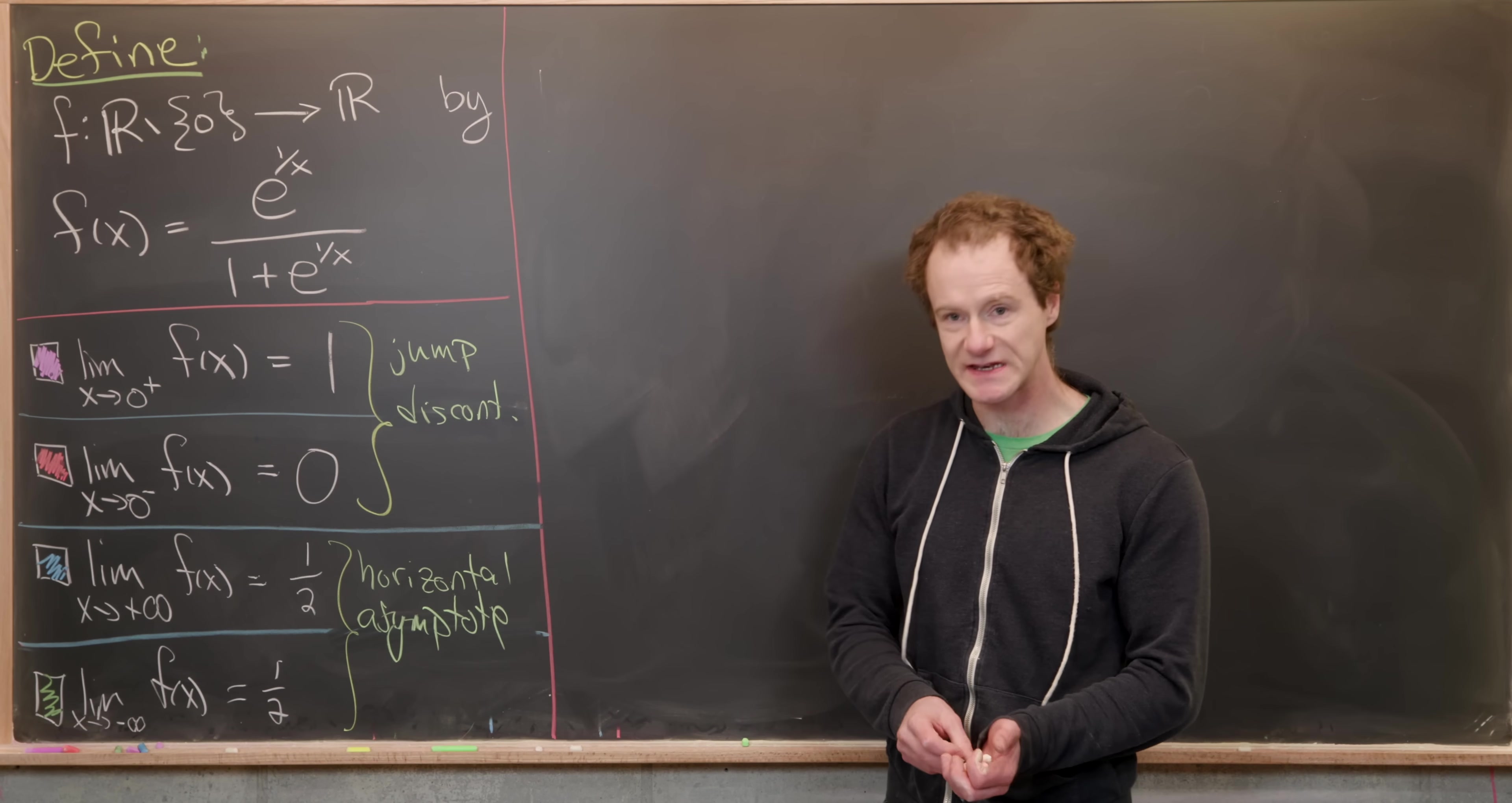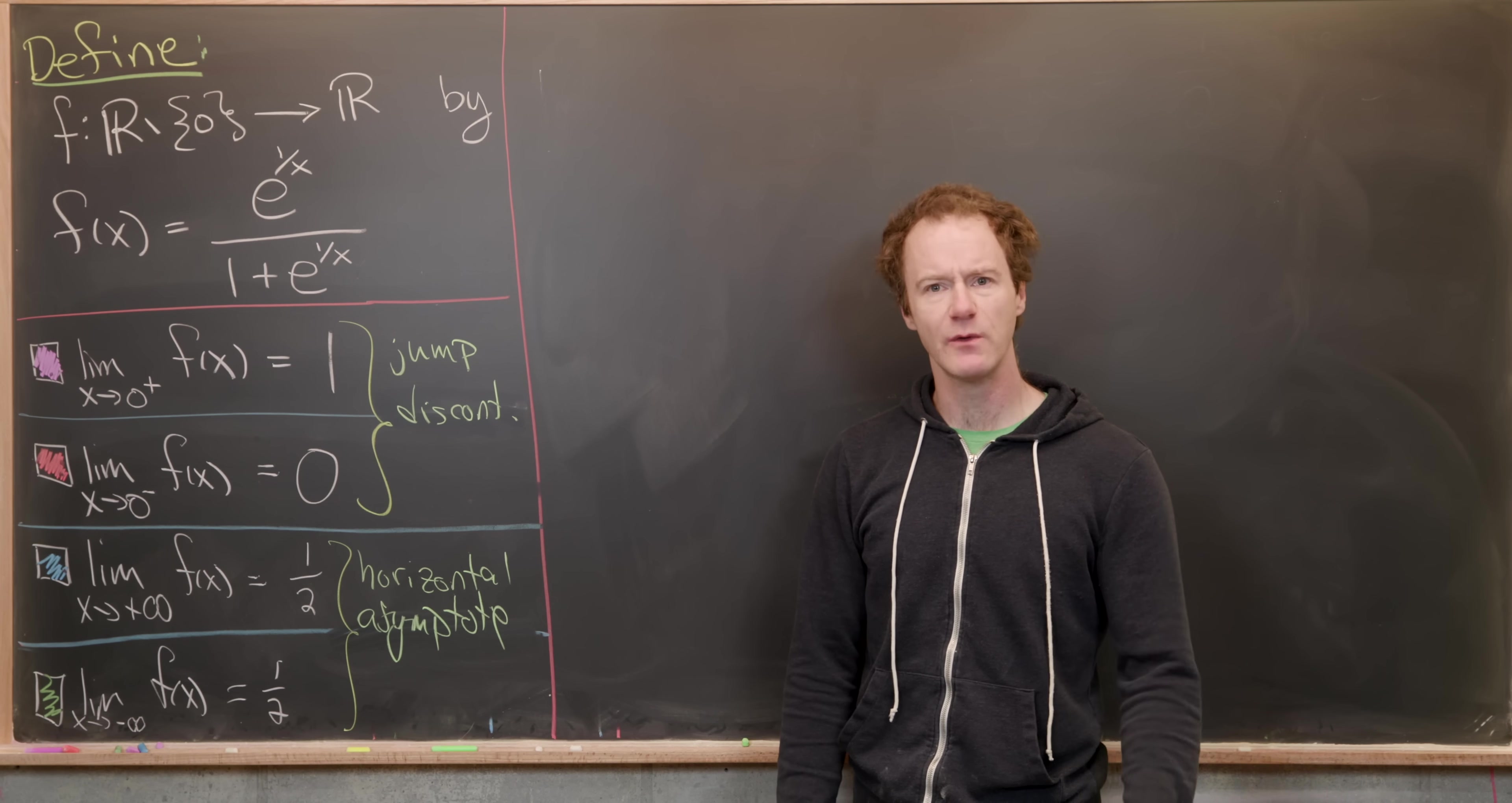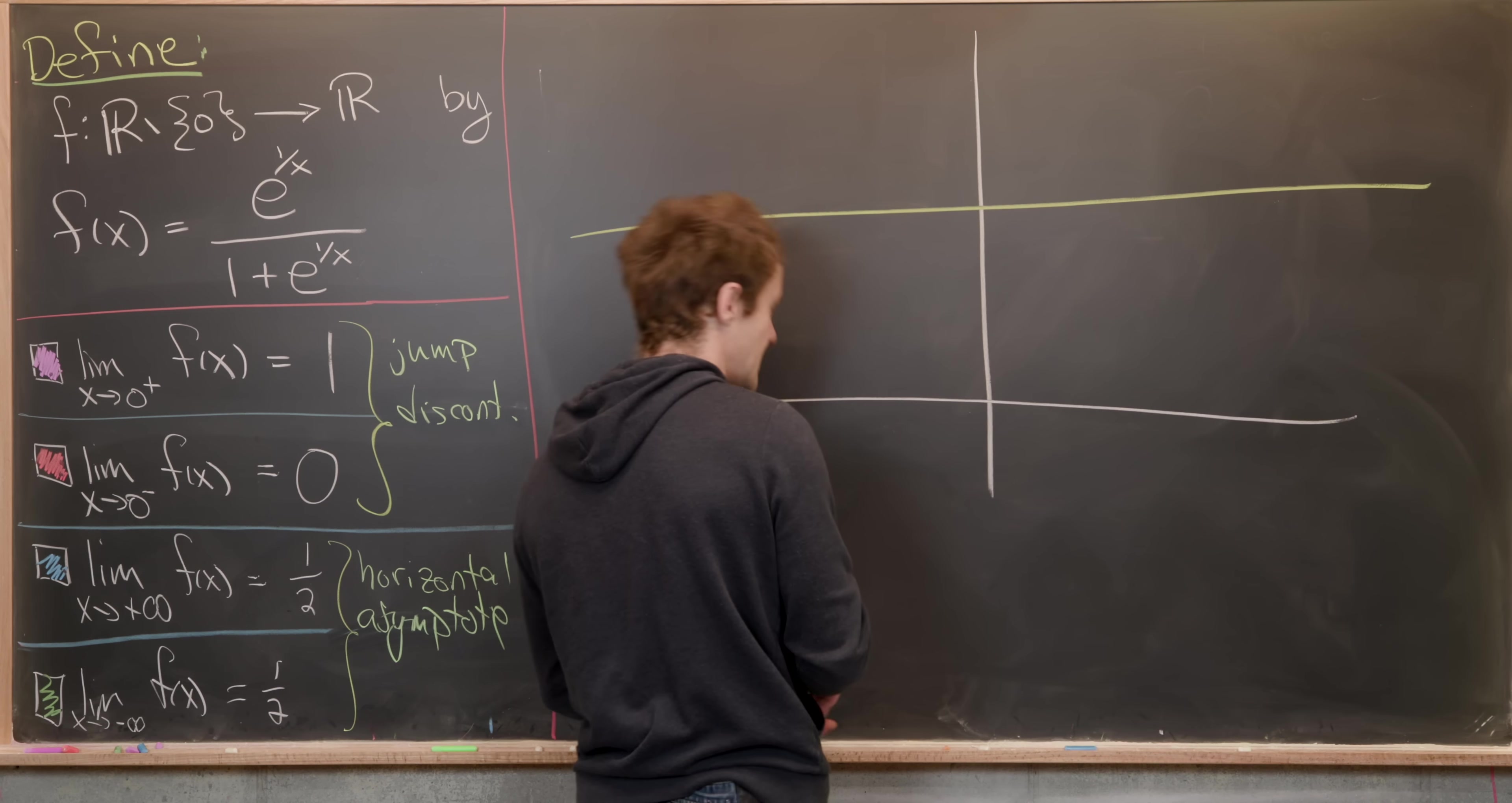So that tells us that we have a horizontal asymptote at one half. Okay, so now we have the data for almost all of the interesting parts of this function. We see that we have a jump discontinuity at x equals zero, and then we see that we have this horizontal asymptote in both directions at y equals half. So now we can go ahead and sketch a graph of this. And it's actually not too tricky. So let's maybe give ourselves an x, y plane like that.